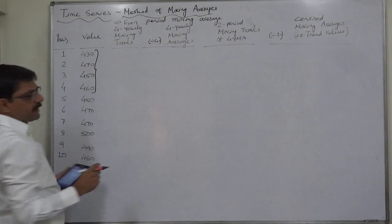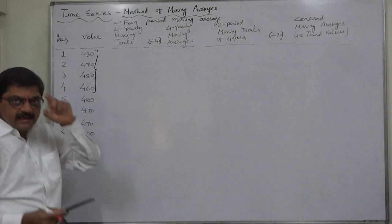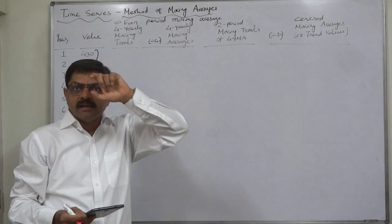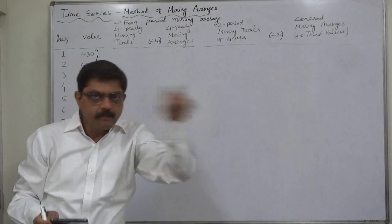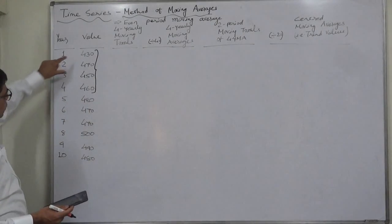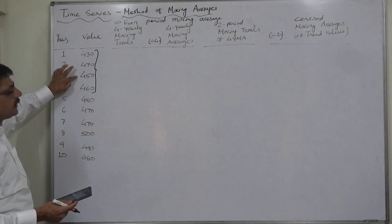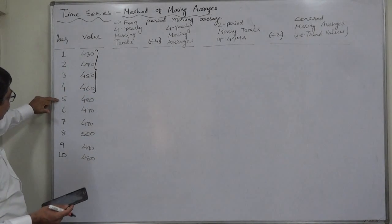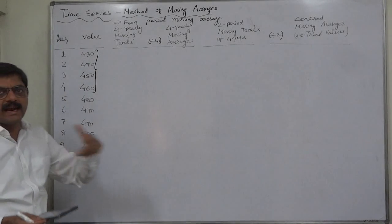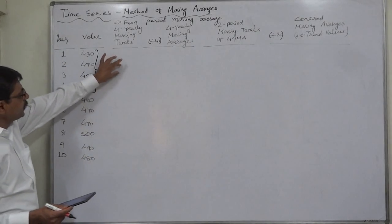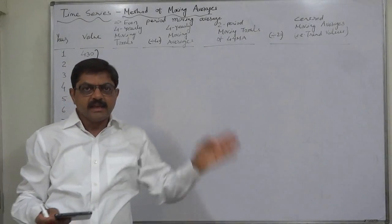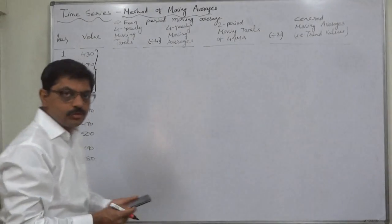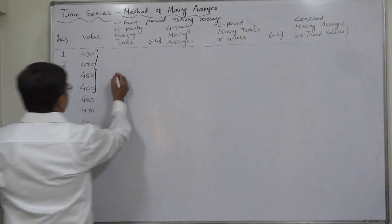In case of moving averages we need to write the total exactly in the center. In the case of three-yearly moving averages we had written the moving total against the second year in every block of three years. Now in this case there are four years, and exactly in the center means between the second and third year of the block. In the first four years it will be written between the second and third year; in the second to fifth year block, between the third and fourth year, and so on. So actually there is no specific year against which we write the moving totals and moving averages.